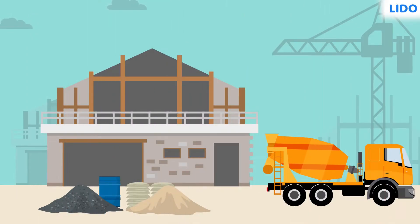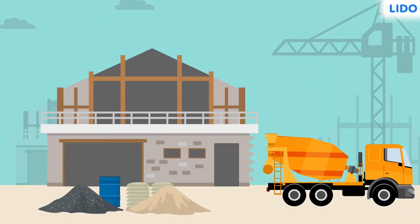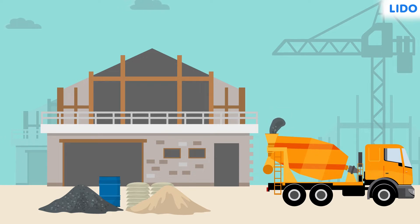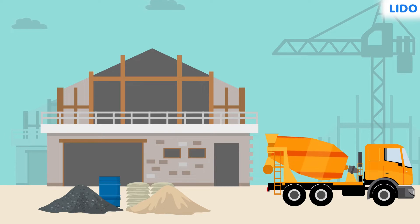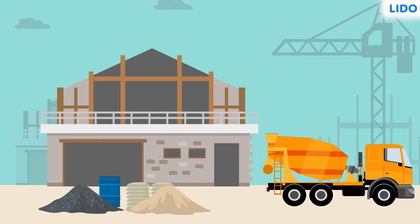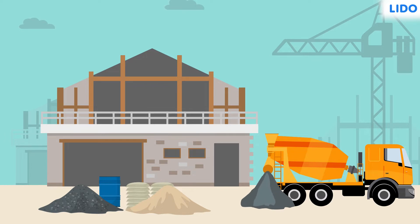Hey guys, have you all seen a cement grinder at a construction site? Sand, gravel, cement and water are put inside it from one side. All these are then ground, mixed, broken down into fine particles and it forms a slurry which is removed from the other end.